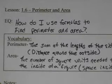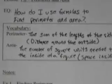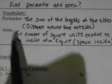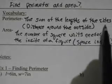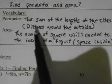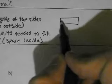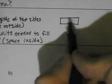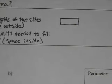First, we need to figure out: what is perimeter and area? Starting with vocabulary, the perimeter is the sum of the lengths of the sides. Basically, it's the distance around the outside of a figure. For example, if we had a rectangle, we'd add up all of the sides — this side plus that side plus this side plus that side. That would be the perimeter, the distance around the outside.